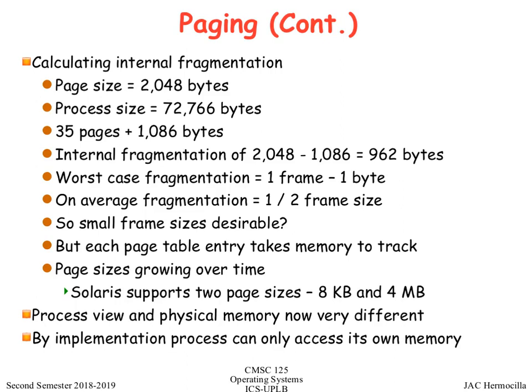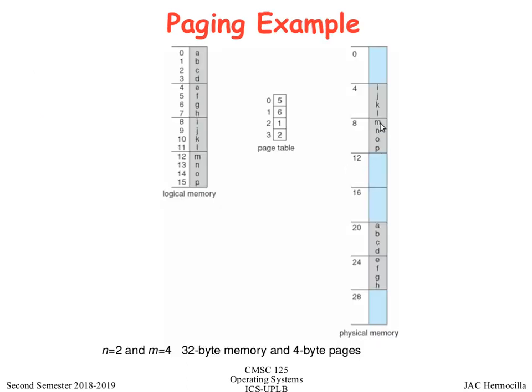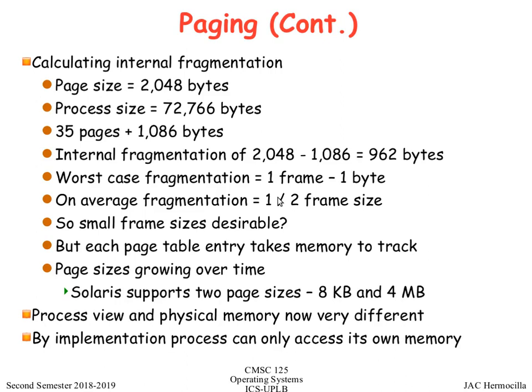There is some internal fragmentation with paging since sizes are fixed. For example, if your data only contains bytes M, N, O — no P — but a full page-sized block is allocated, the space consumed by P is wasted. These computations describe how much internal fragmentation is incurred in a paging system.